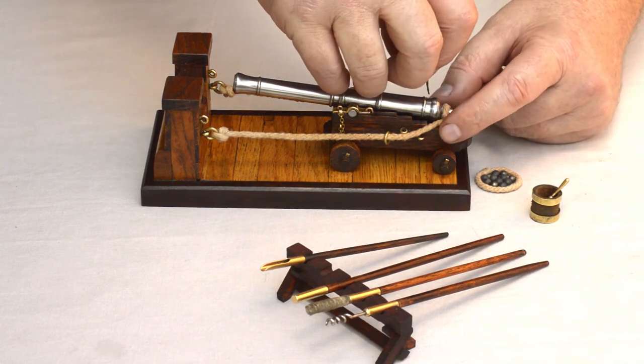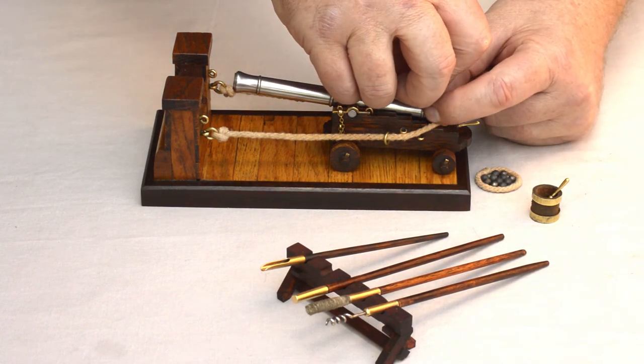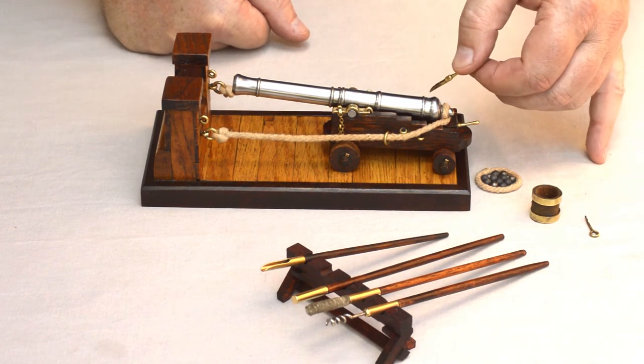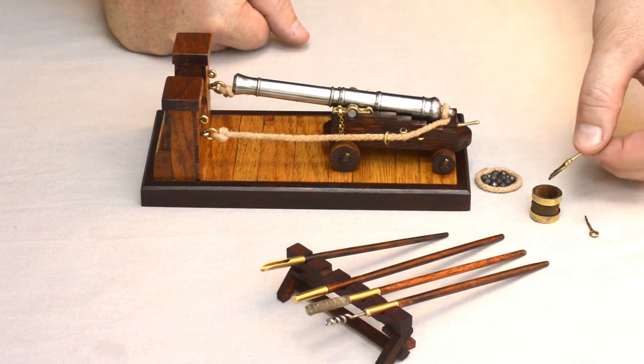But before that, the main charge has to be pricked using the reamer. The gun is now ready to be primed, and in this case with a small model, it'll be primed by using fine powder in the small ladle.